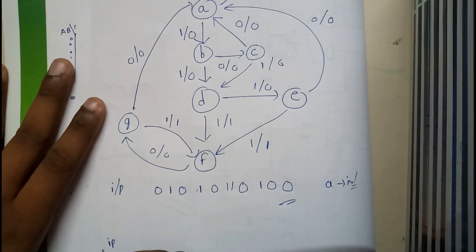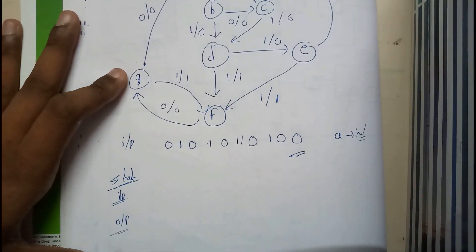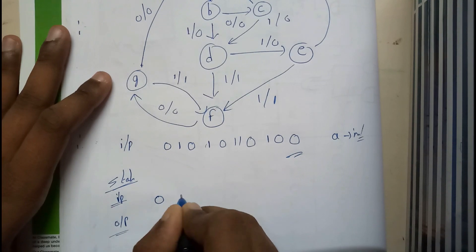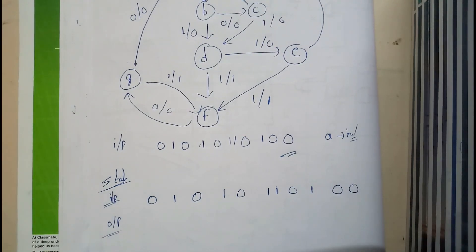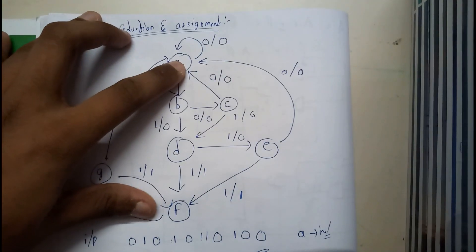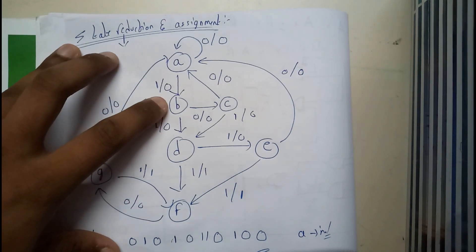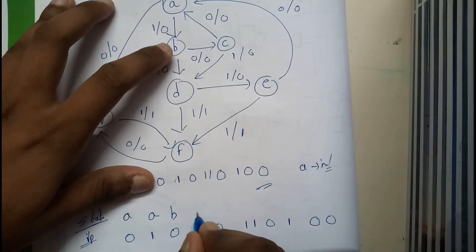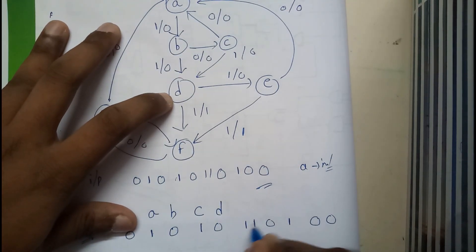Let us write the input first. Write 'state' above and 'output' below. The input sequence is: 1, 1, 0, 1, 0, 0. We start at A, so applying zero to A we get A; applying one to A we get B. For B if you give zero you get C; for C if you give one you get D.